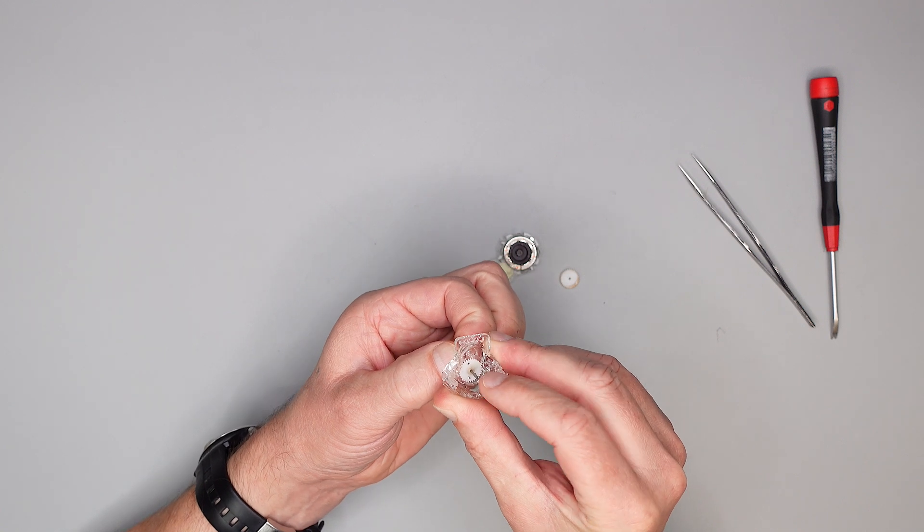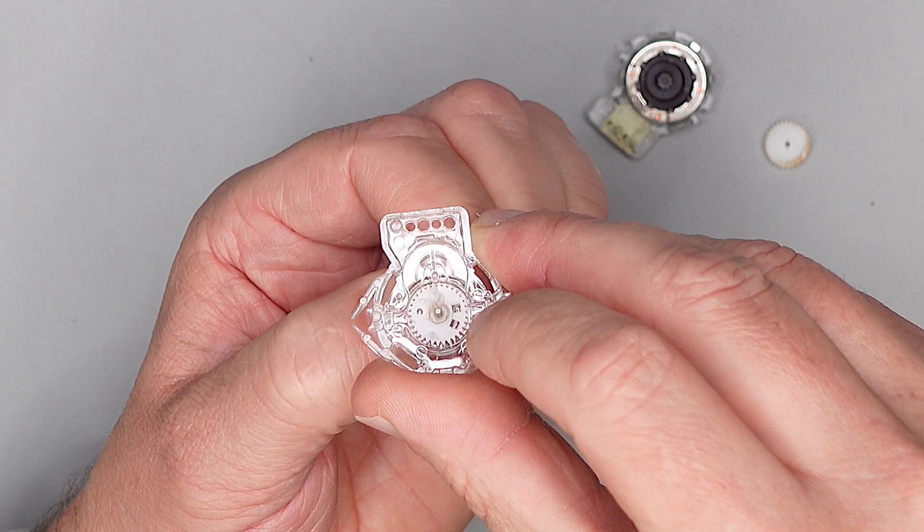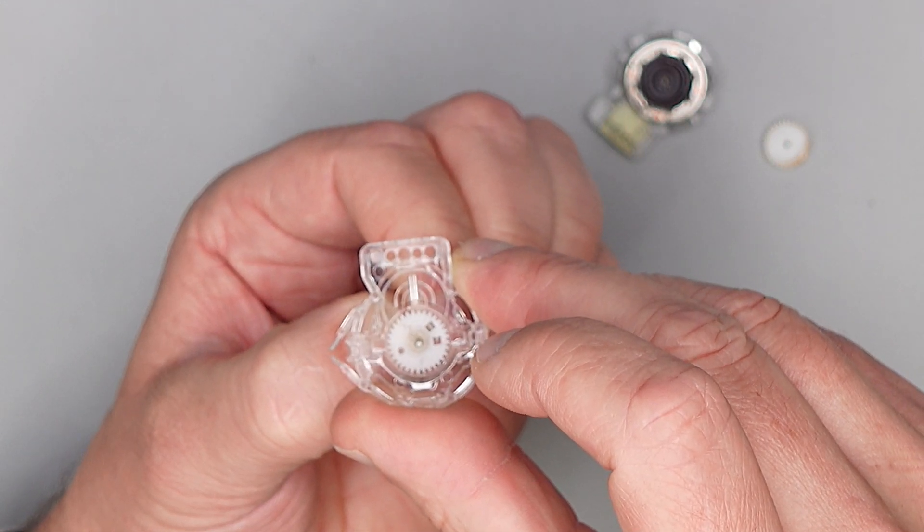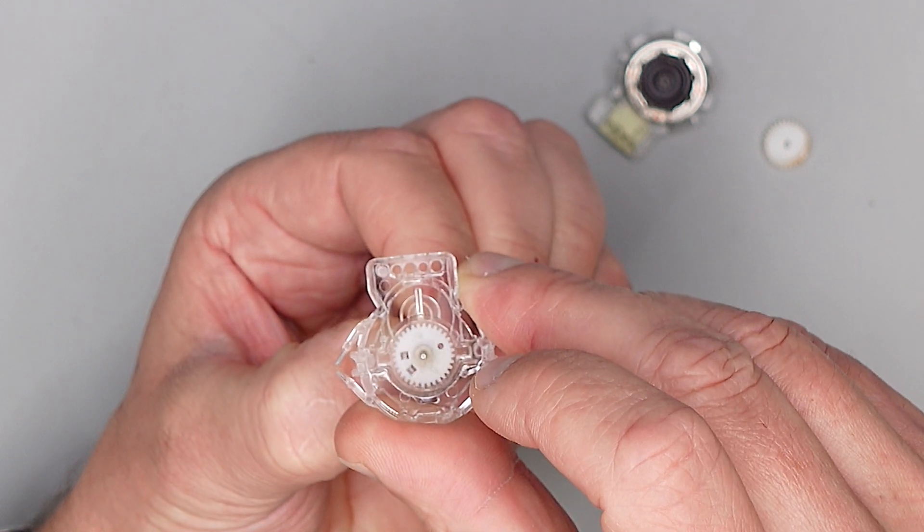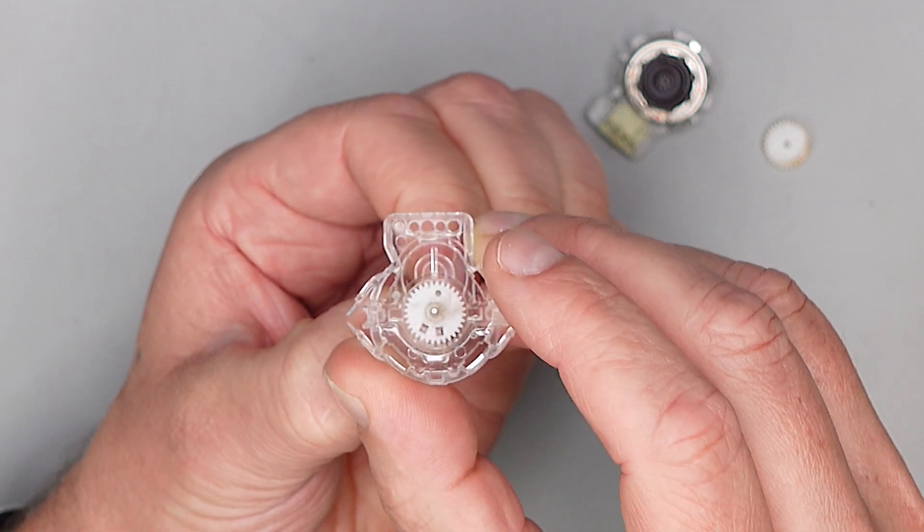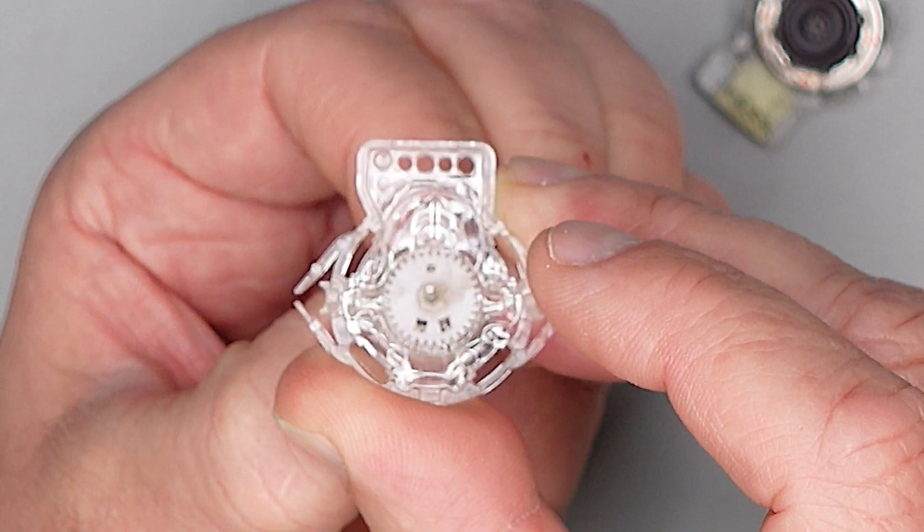So, wichtig ist, dass man jetzt hier hinten mit dem Finger festhält und dabei immer nach unten zieht, dass man hier Spannung drauf hat. So, und jetzt drehen wir, und jetzt sieht man hier schon, wenn man genau guckt, wie dieser Mitnehmer von dem ersten Zahnrad jetzt die Feder mitnimmt. So, jetzt bleiben wir hier unten an dieser Nase hängen, und da müssen wir jetzt ganz vorsichtig die Feder ein Stück hochdrücken, über die Nase rüber.